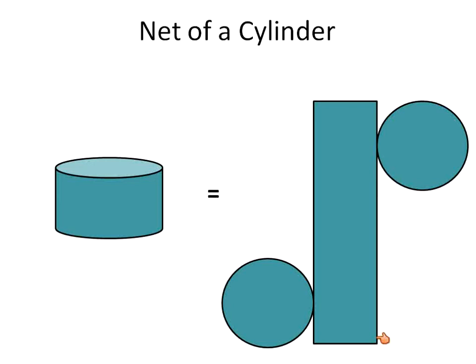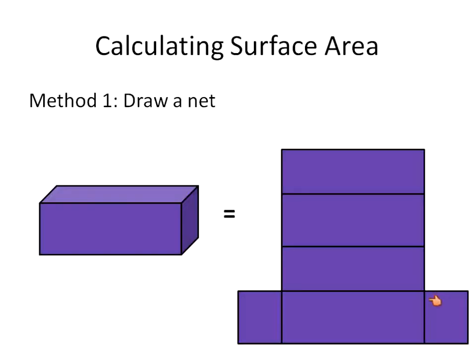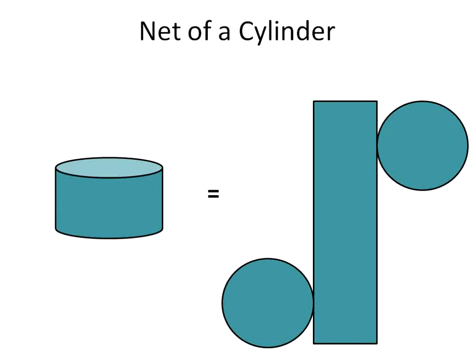Now the thing with these rectangles is that the length of the rectangle is the same as the perimeter of your base. And that's the case in all three shapes. Our perimeter of our base is the same as the length of this rectangle. The perimeter of this base is the length of this rectangle. And that's always going to be the case. So that helps us when we're putting together our equation.